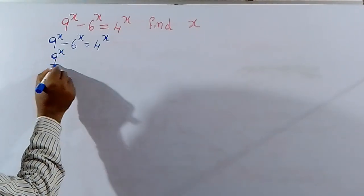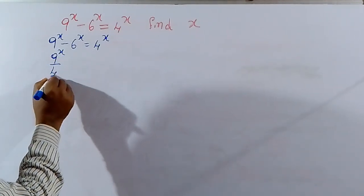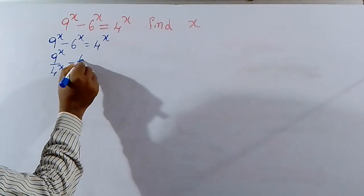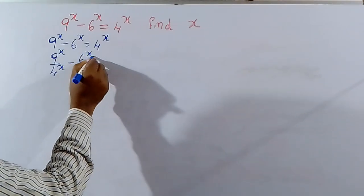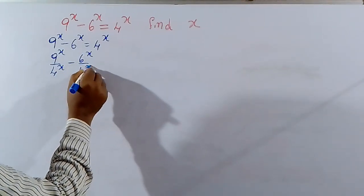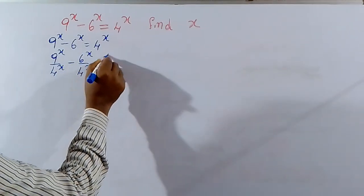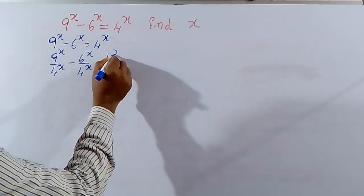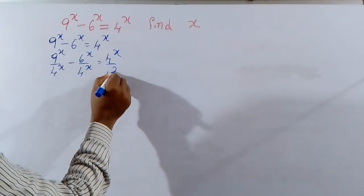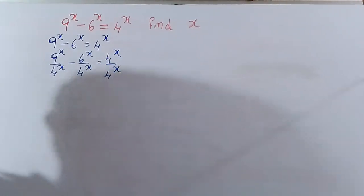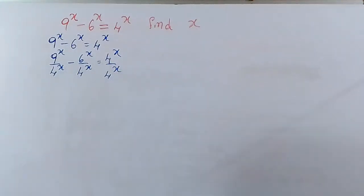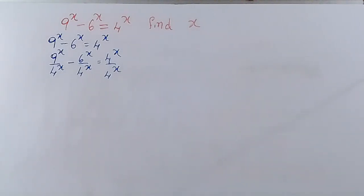9 power x by 4 power x minus 6 power x by 4 power x equal to 4 power x by 4 power x. Each and every term is divided by 4 power x. 4 power x divided by 4 power x.